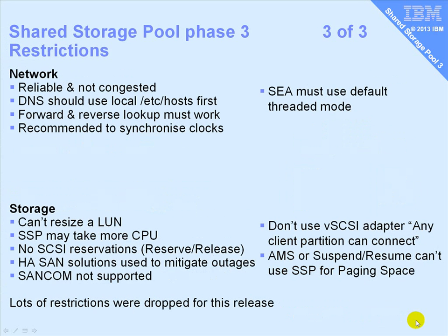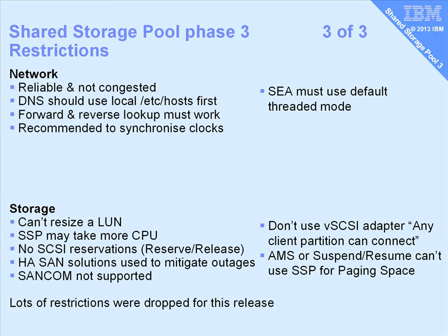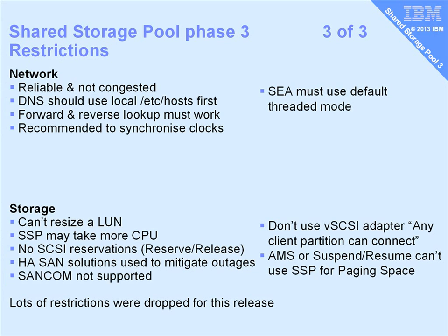Finally, in the README there are a few restrictions, though you can see a lot of blank space on this slide as many have been removed in this release — they're not really restrictions, some are just notes. The network has to be reliable to run a cluster — so you want DNS to work with reverse and forward lookups, and synchronised clocks. There's also a recommendation that you can now use a dedicated network for SSP network traffic, meaning you're not running over a congested user-side network, so your cluster will never have a problem.